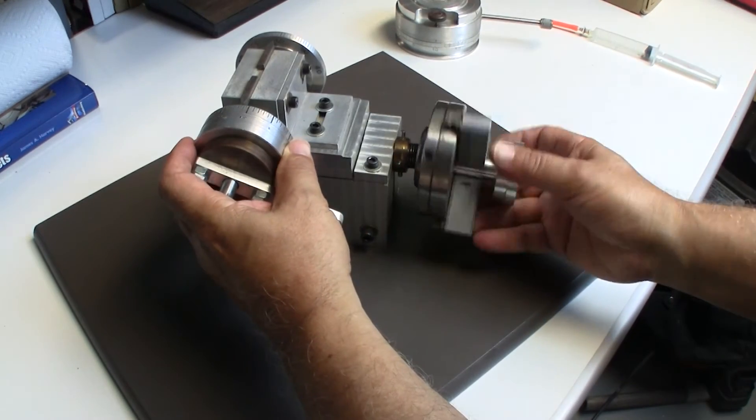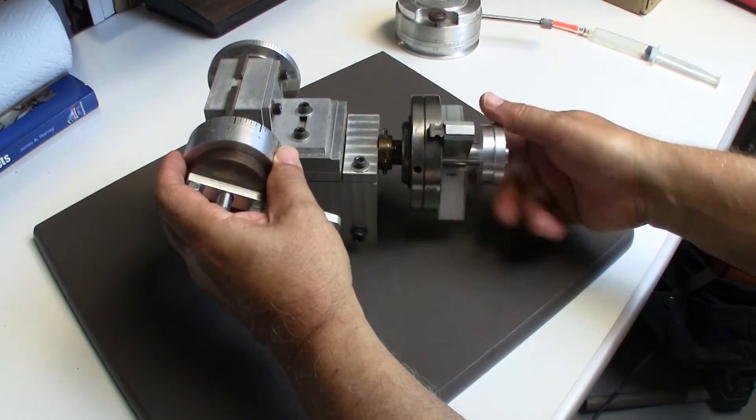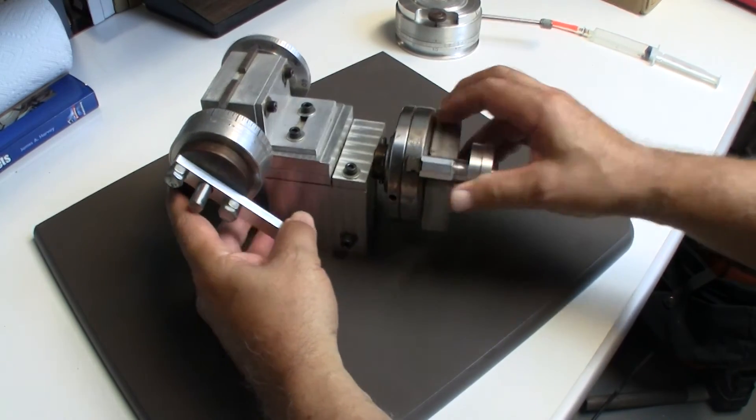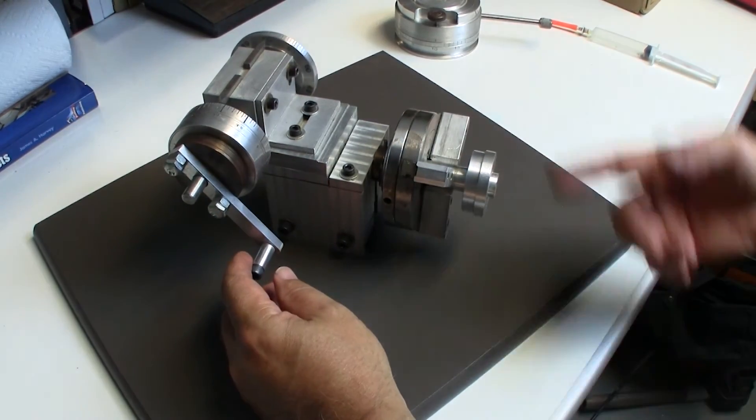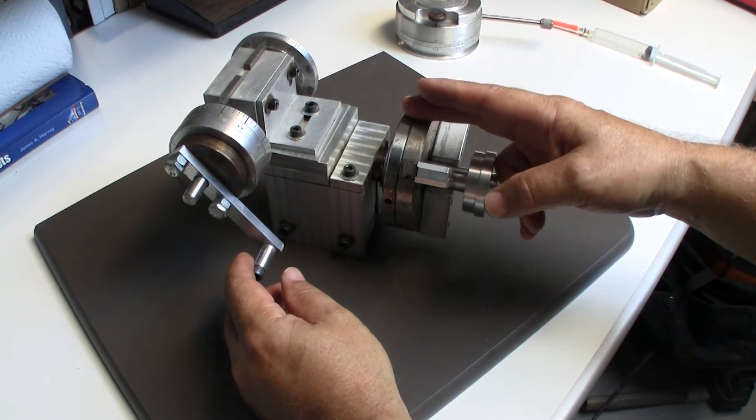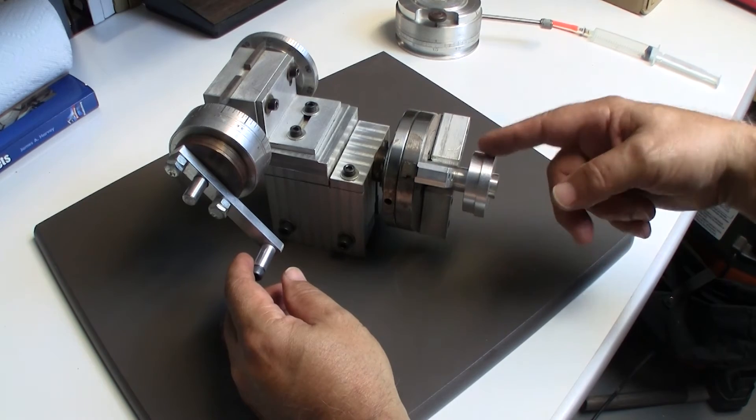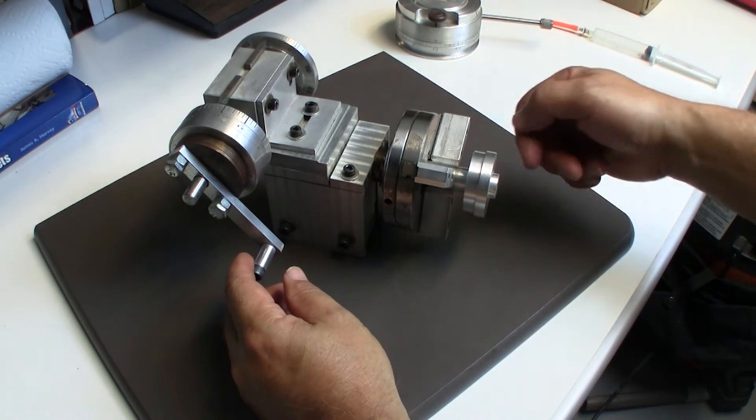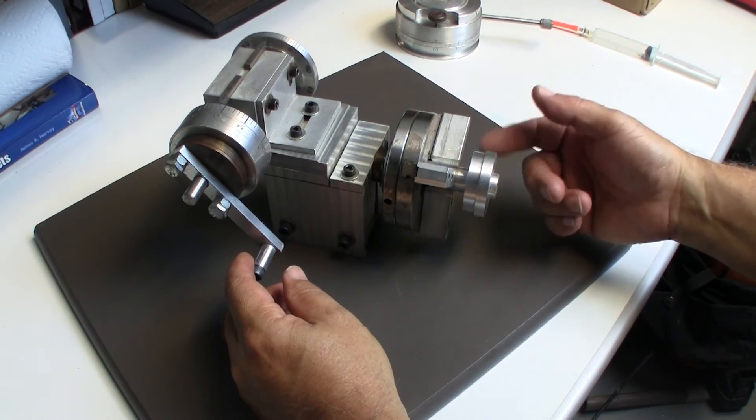You can actually attach this to it because, again, remember the 3/4-16 thread - so any kind of work piece that's either threaded to that thread, or using a tag three-jaw chuck, this can be a gear, for instance, that I will machine using an involute gear cutter.